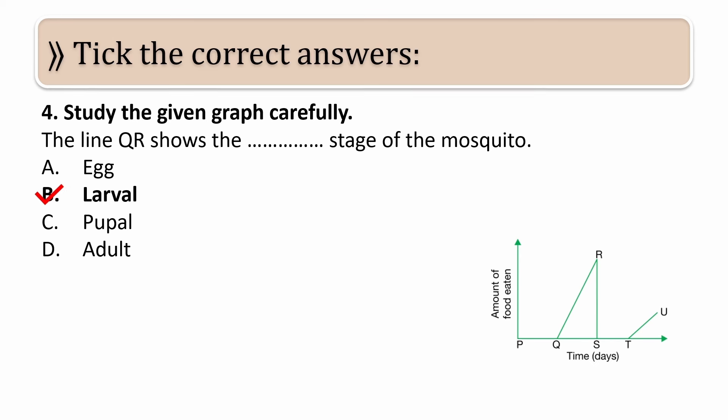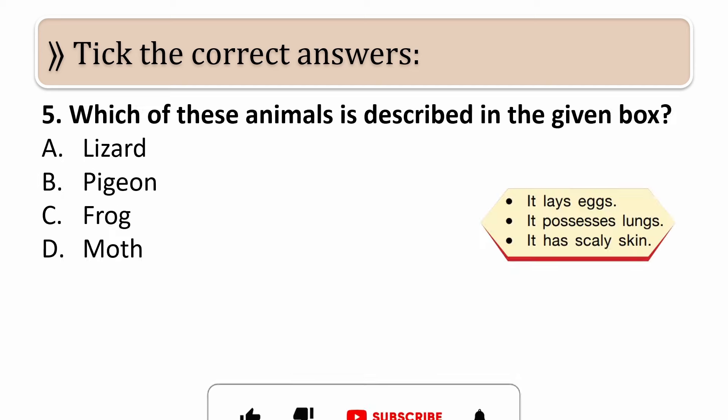The correct answer is larval stage. This is the first stage. QR is the first stage, and this is the larval stage for mosquitoes. In fact, for any insect, it will be larval.